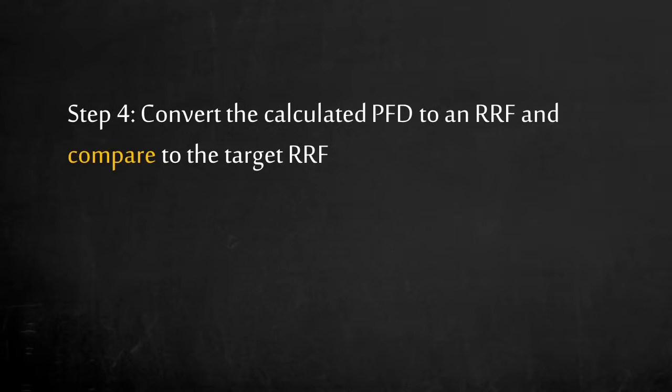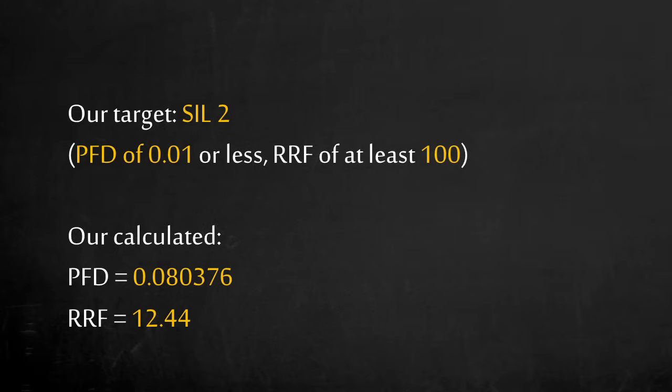Step 4. Now that we have calculated the PFD of the safety instrumented function, let's compare it to our target. The probability of failure on demand of this safety instrumented function is around 0.08, which is around an 8% chance of failure. In other words, it has a risk reduction factor of 12.44. Uh oh, the RRF isn't quite where we need it to be. We needed a risk reduction factor of at least 100.